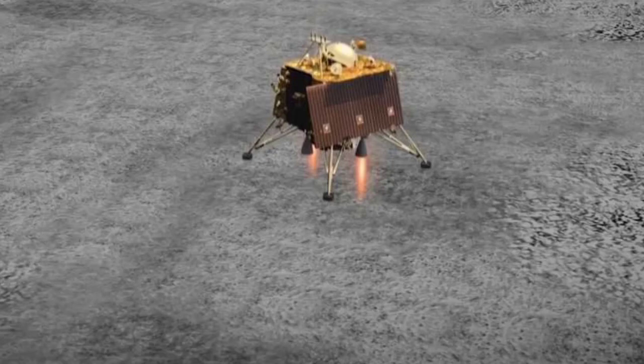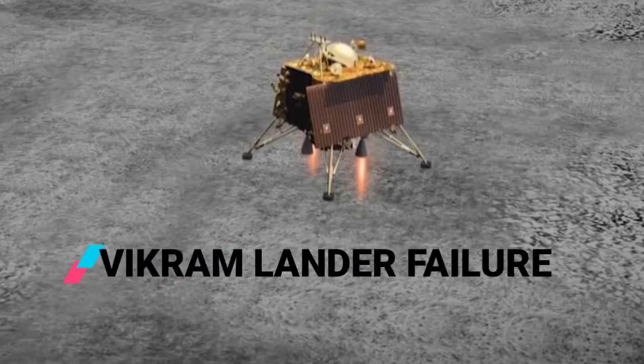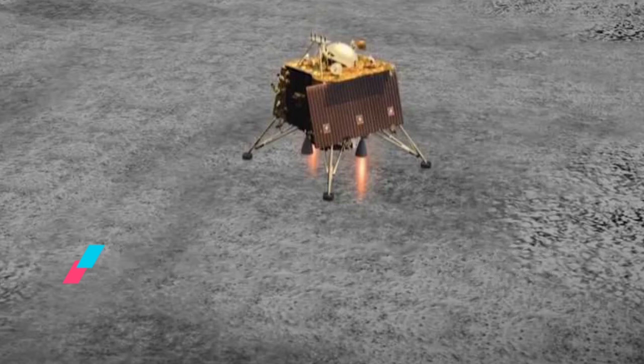Solution for Chandrayaan-2 signal loss. The signal was lost due to the damage on the lander. So by using silicon we could acquire soft landing without any damage.